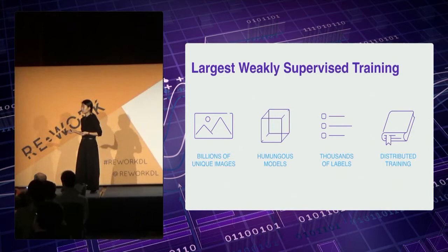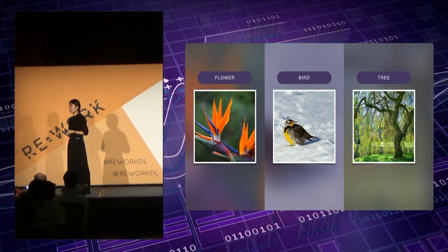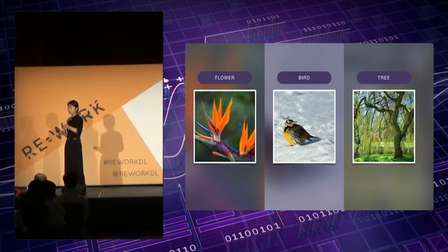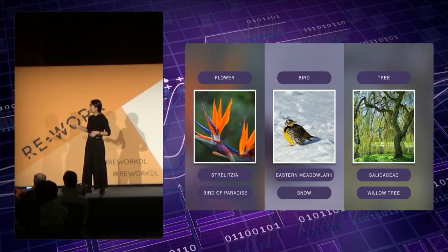The end result is a state-of-the-art system that can now recognize concepts at a more accurate and detailed level than ever before. We can now recognize almost 20,000 categories across many different verticals such as flowers, birds, and trees. For example, taking this middle picture, in addition to predicting it as a bird, we can tell you it's actually an Eastern Meadowlark in the photo.